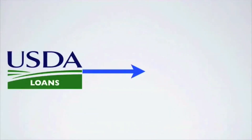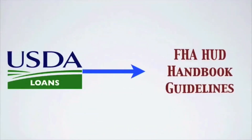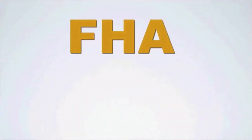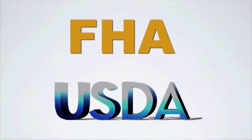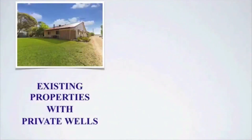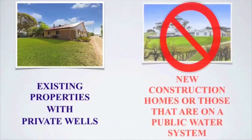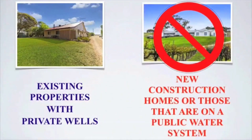As a quick review, USDA loans follow FHA HUD handbook guidelines for minimum property requirements. So the distances and measurements given will be applicable to both FHA and USDA home loans. Our content today will be for existing properties with private wells, and not for new construction homes or for those that are on a public water system.